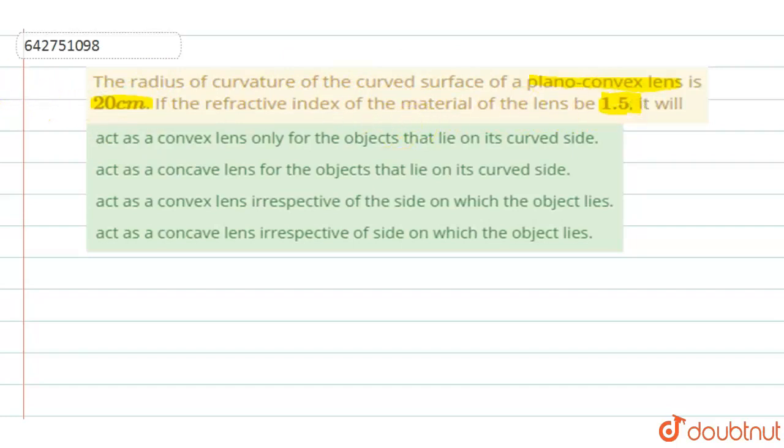So here they are discussing a plano-convex lens. A plano-convex lens has one surface that is a plane surface and the other surface is a convex surface. Let me draw this correctly.